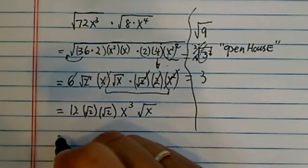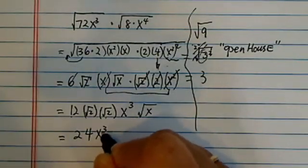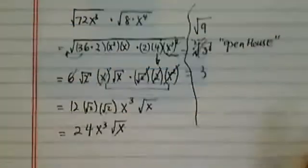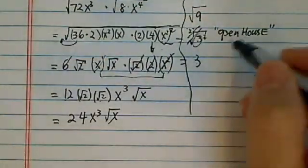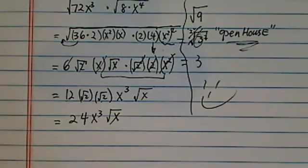Radical 2 times radical 2 becomes 2. 2 times 12, that's 24. X cubed, radical X. That wasn't too bad. Remember about this open house when you simplify the radicals. Have a confident day.